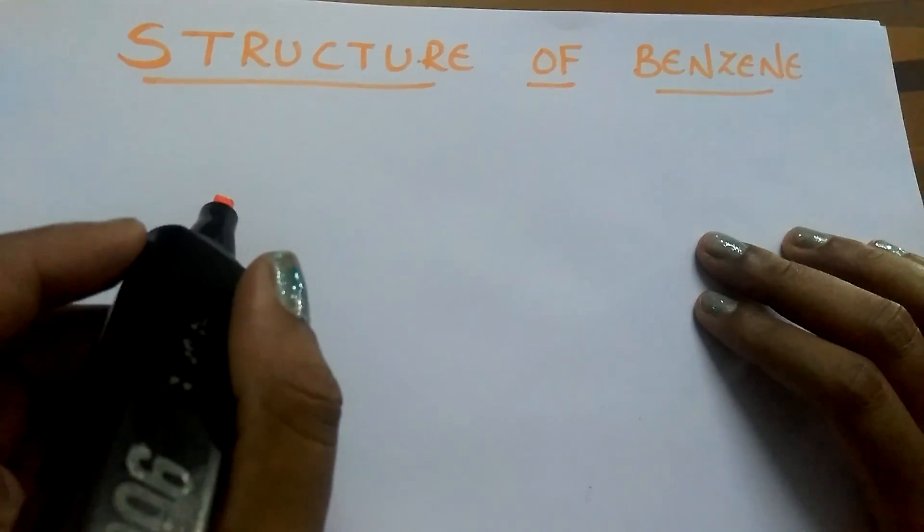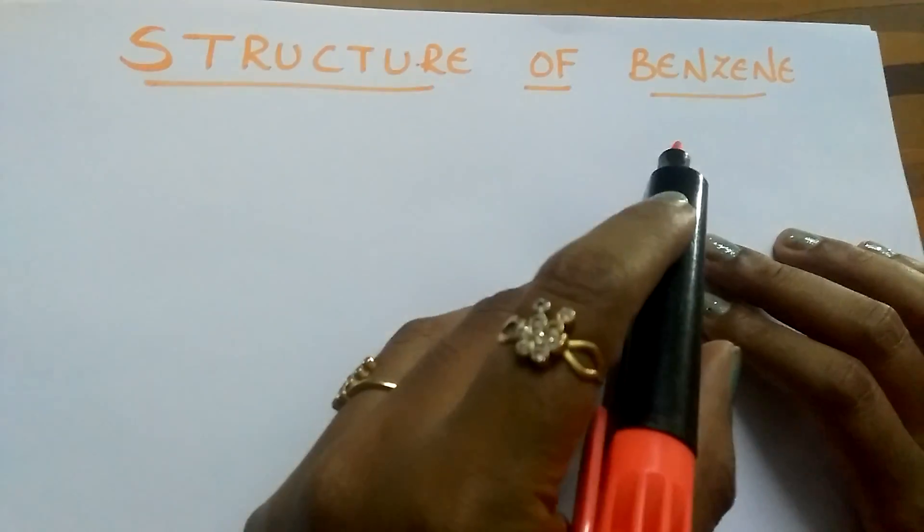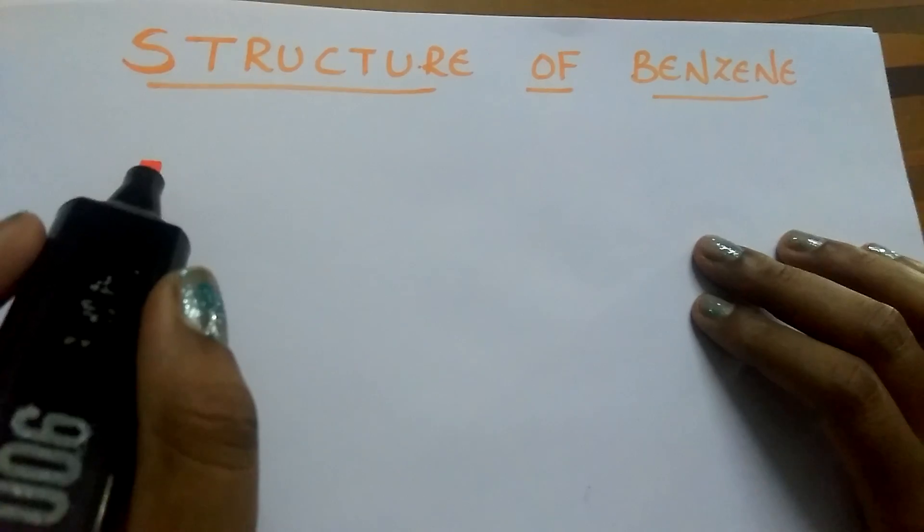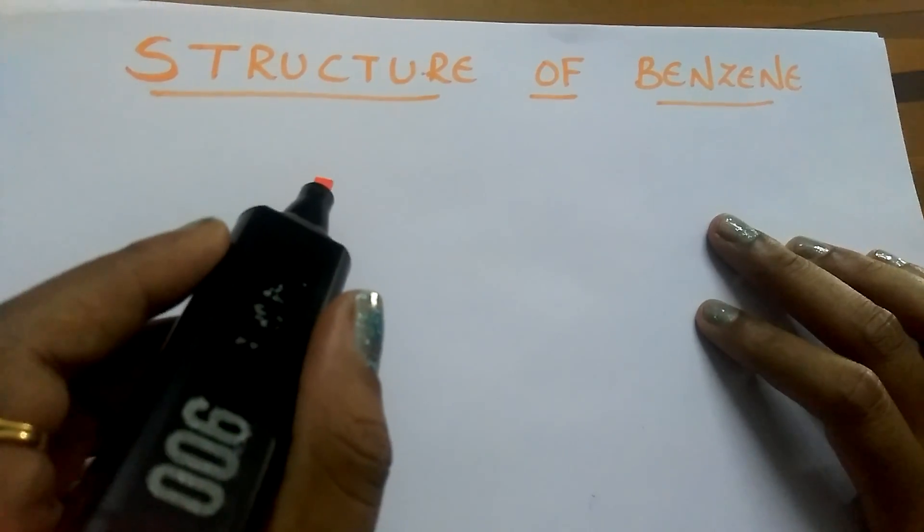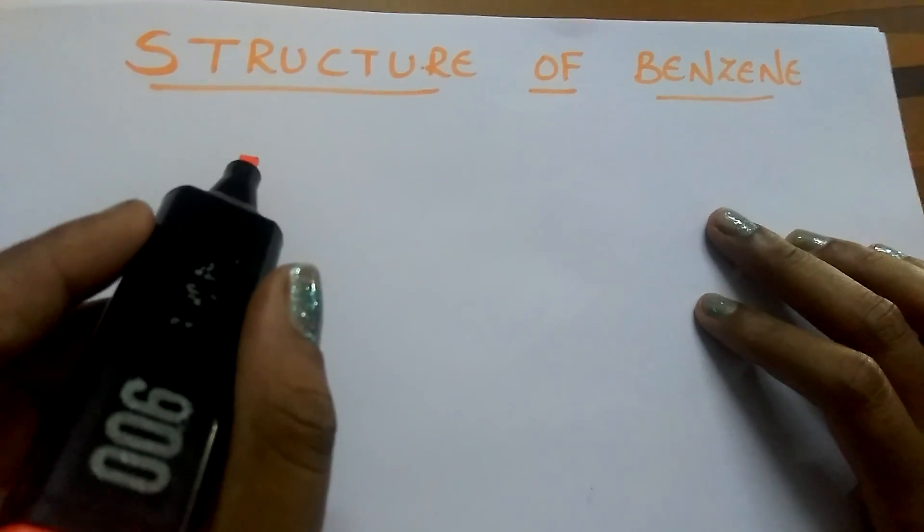Hi students, today I am going to explain the structure of benzene. Faraday first discovered it and Mesherlis gave the formula of benzene as C6H6.